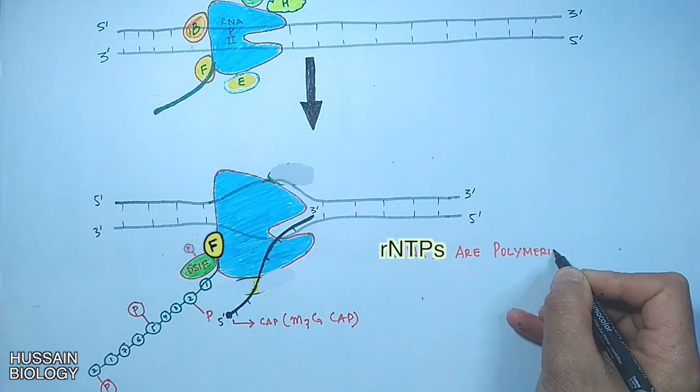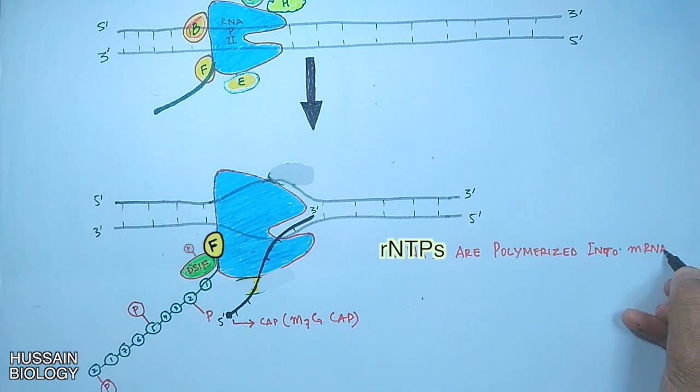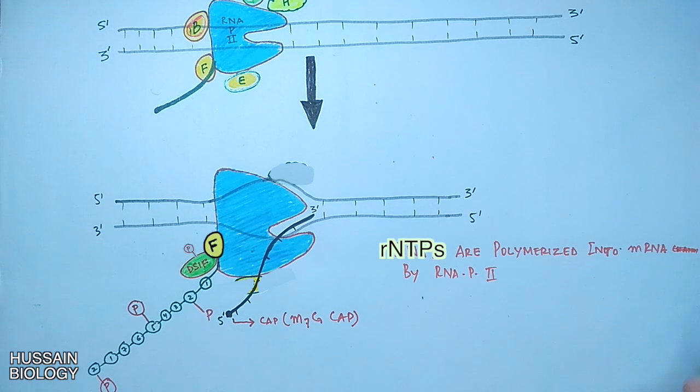So during the elongation process the NTPs are polymerized together by RNA polymerase 2 to form mRNA molecule. So this is how transcription elongation takes place in eukaryotes.